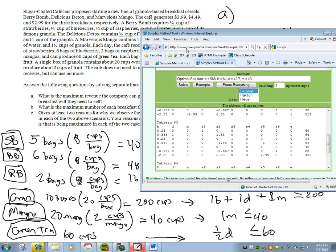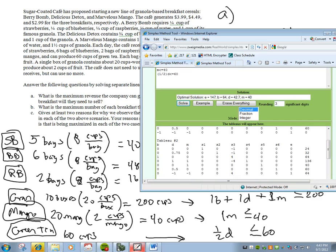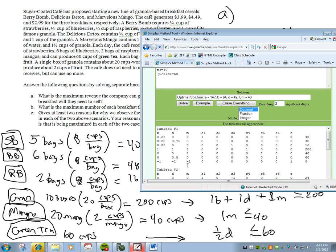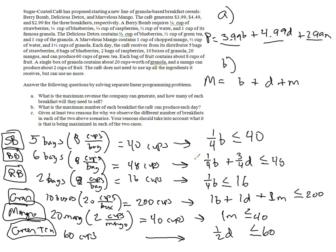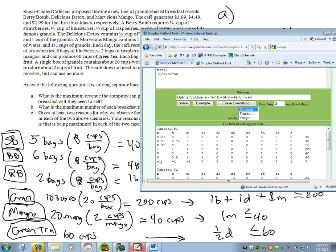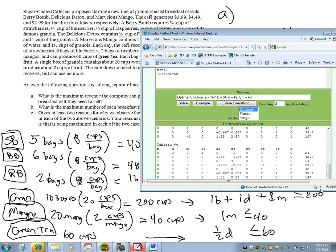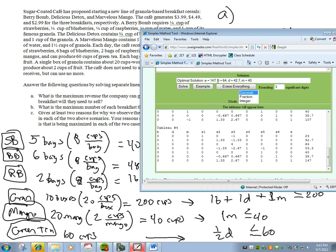Now if we do the same exact thing, but instead of having our constraint on revenue, we use this guy here, subtracting 1B, subtracting 1D, subtracting 1M, we actually get a slightly different result. We find that B is 64, there's your 64, D is 42.7, and M is 40, which generates a total of 147 meals.